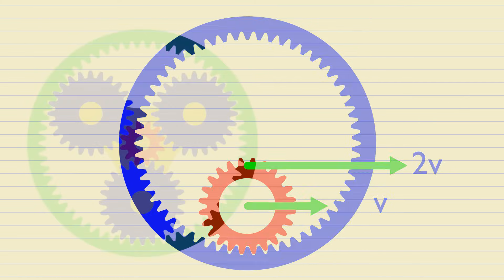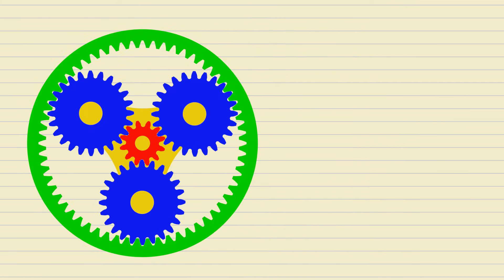We now have all the pieces in place to derive our gear ratio. We need to find the ratio of the angular velocity of the sun to that of the carrier. The linear velocity of the carrier is the angular velocity of the carrier times its distance from the center.